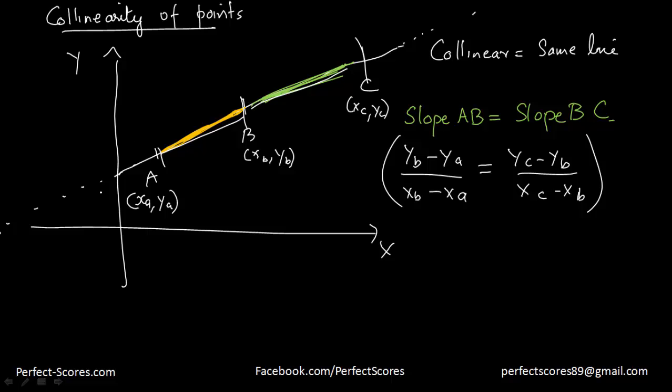let's suppose there is another point here, point D, with coordinates X_D and Y_D. The slope of AD would be equal to the slope of AB, which would be equal to the slope of BC, which would be equal to the slope of CD.